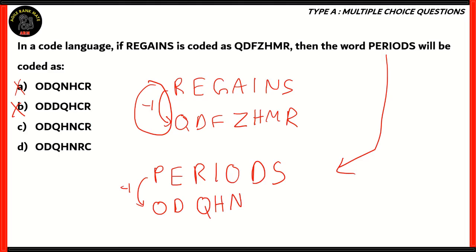Now we have two options, whether it's CR or RC. The letter that comes before D in the alphabet is C. Therefore, option C is the correct option and not option D, because R does not come before D in the alphabetical order. Option C, ODQHNCR, is the right answer because it follows the logic using the previous letter.